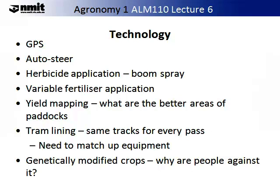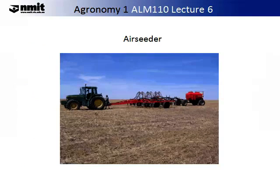Yield mapping is another important technology which has been advancing in recent years — this is where you take samples at known locations and then produce a 3D map. Yield mapping tends to come under the umbrella of precision agriculture, as does variable fertiliser application. Another consideration where technology has aided is tramlining, where the same tracks are used for every pass and you need to match up equipment. Finally, genetically modified crops are a significant advancement in modern agriculture, but they do come at a cost. There are some groups and consumers that are against this, and therefore you really need to know your market before you embark on such crops.